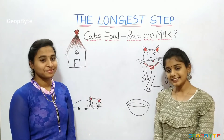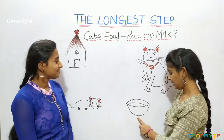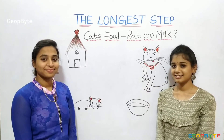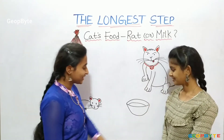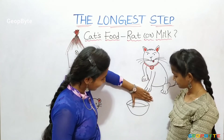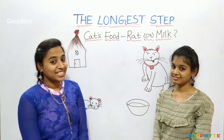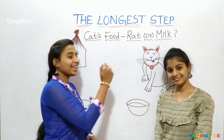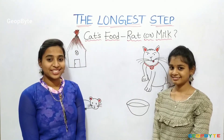What is the distance between milk and cat? Let us measure. Yes, the distance between milk and cat is 4 fingers.